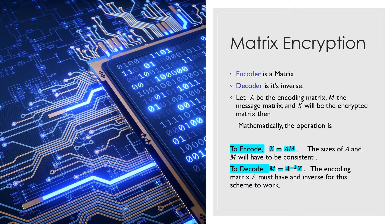To decode and get the message M, we have to multiply the inverse of the given encoder matrix — which is nothing but the decoder matrix — by the encrypted matrix X. So M, the message, will be A-inverse multiplied by X.